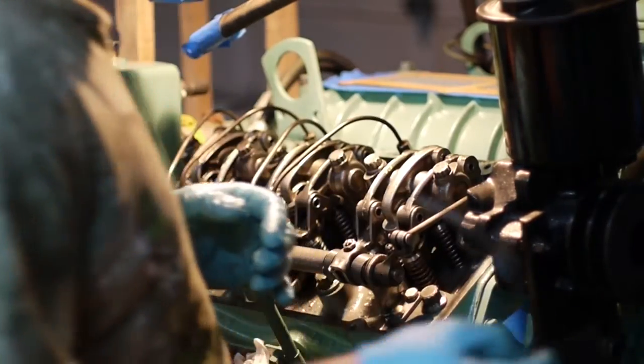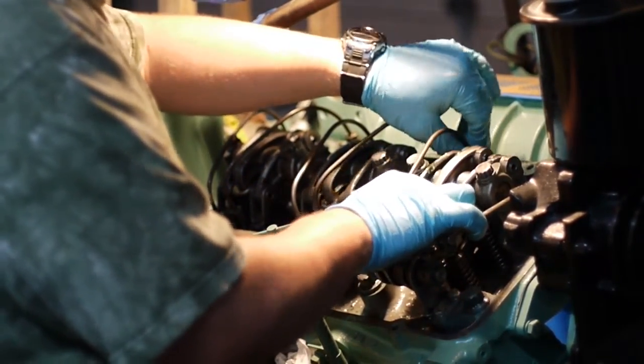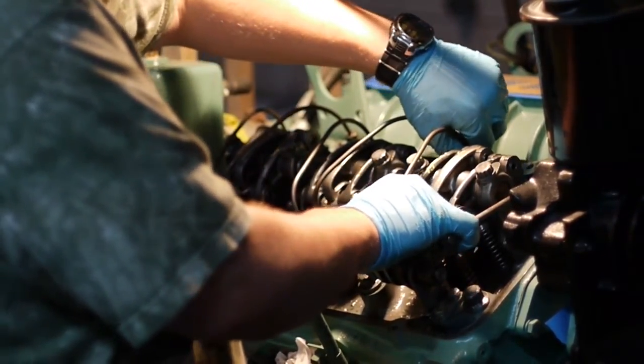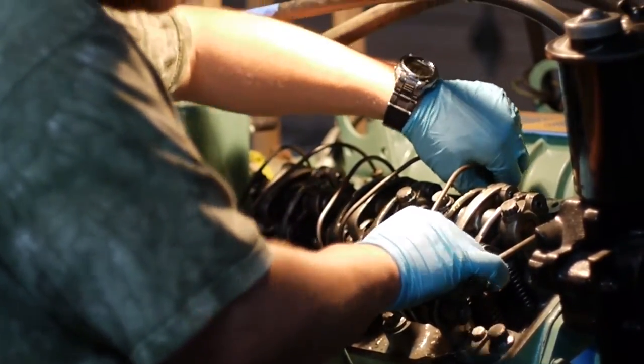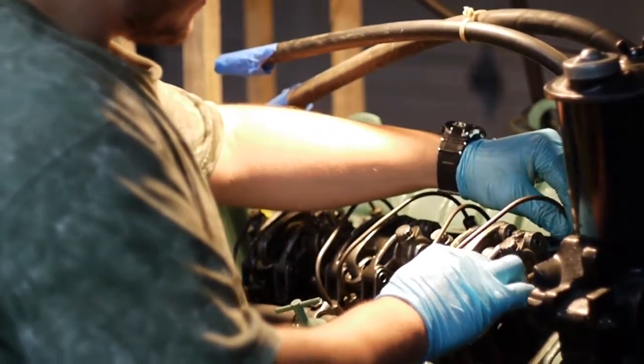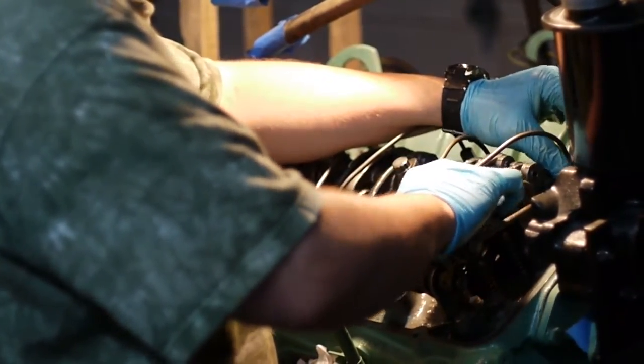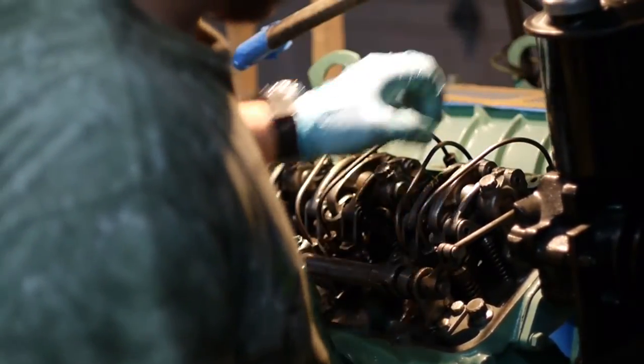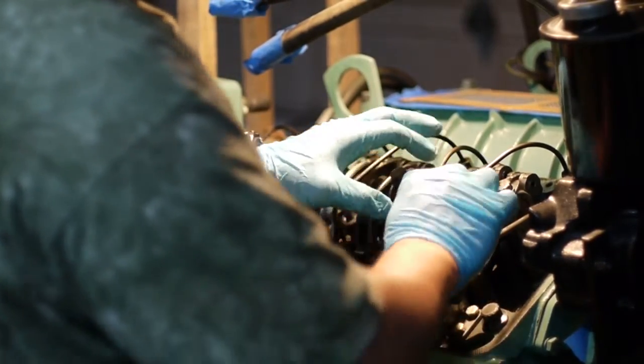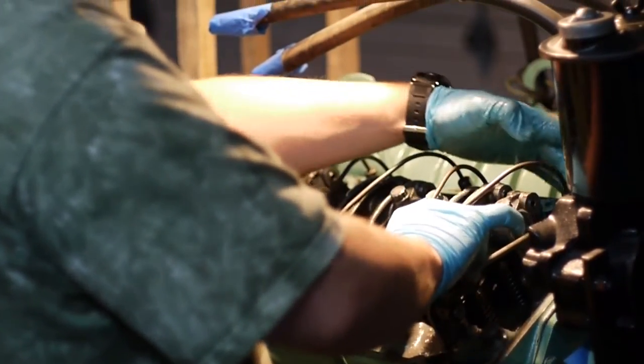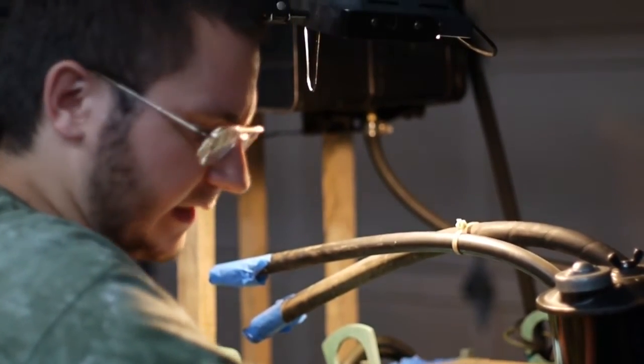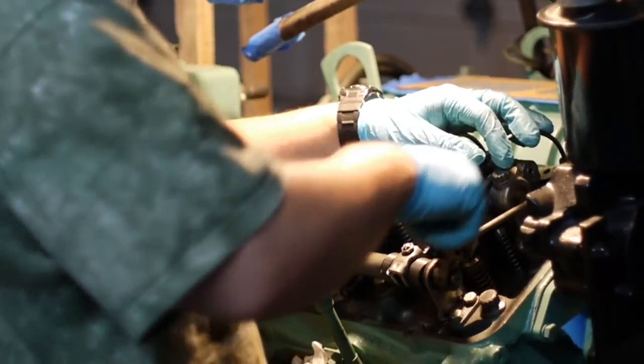Now we can go ahead and reinstall the fuel pipes to the injector. These are supposed to be replaced every time you remove them because there's a flared end on these pipes. But you can reuse them. However, you have to be careful. If when running the engine you notice that fuel is leaking from any of the connections, you should go ahead and shut the engine off and then replace the fuel pipe to the injector.